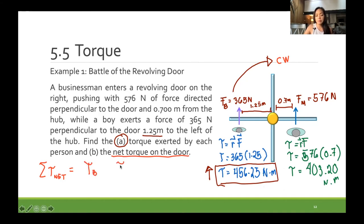Because the boy and the man actually have a different direction. I will use negative for the boy and positive for the man, because the boy is in the negative x-axis and the man is at the positive x. So the boy is negative 456.25 plus 403.20 newton meters.